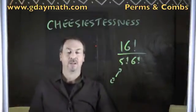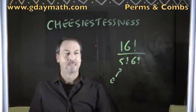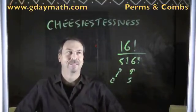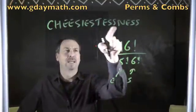There's 16 factorial divided by 5 factorial or 6 factorial ways to work out, to rearrange the letters of the word, cheesiestness. I'm right, there's no other repeat letters. Okay.